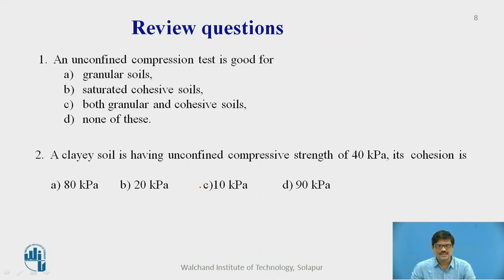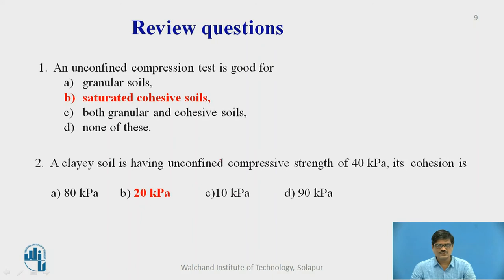Let us take some review questions. Look at these two MCQ questions. The first question: an unconfined compression test is good for — four options are given. The second question: a clayey soil has an unconfined compressive strength of 40 kPa; its cohesion is — four options are given. The answers: the unconfined compression test is good for saturated cohesive soil. For the second question, the cohesion is 20 kPa, because cohesion is half of unconfined compressive strength.